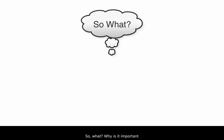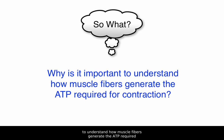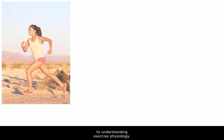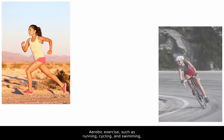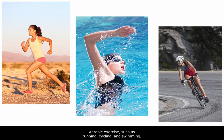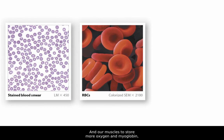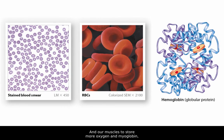So what? Why is it important to understand how muscle fibers generate the ATP required for contraction? Well, this knowledge is crucial to understanding exercise physiology. Aerobic exercise, such as running, cycling, and swimming, triggers our blood to carry more oxygen by increasing red blood cell count, and our muscles to store more oxygen in myoglobin, a protein similar to the hemoglobin that carries oxygen in blood.